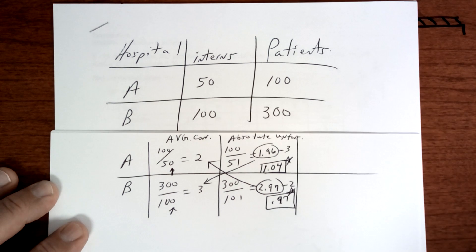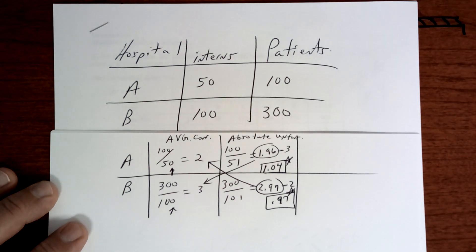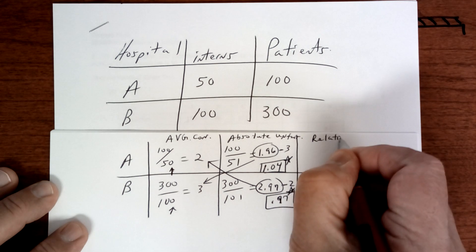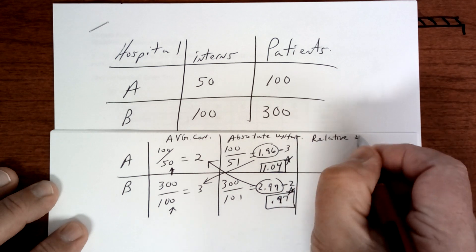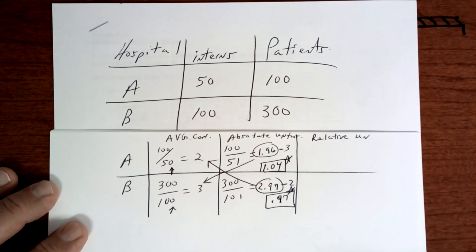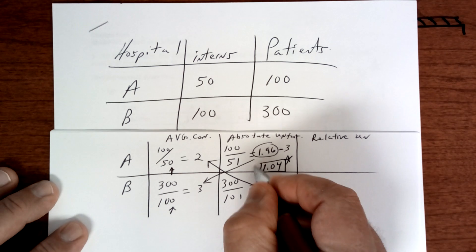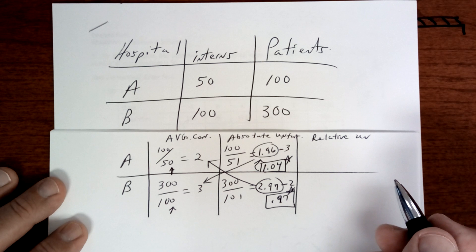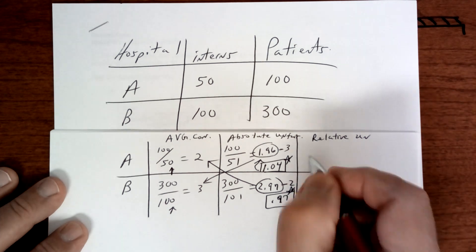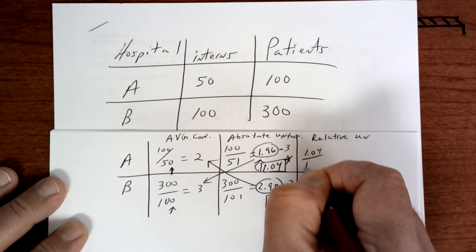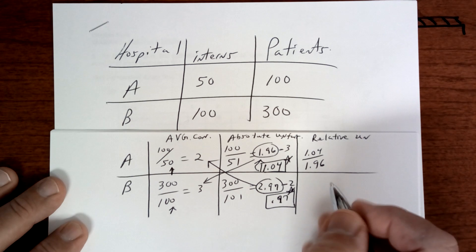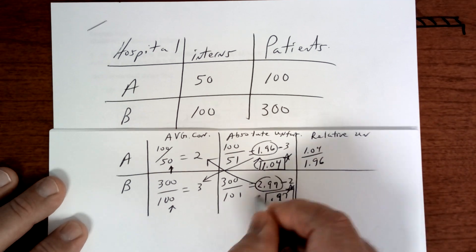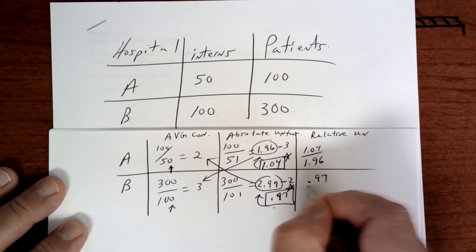To get the relative unfairness, you're going to divide the absolute unfairness divided by the average constituency — the new one. So it's going to be 1.04 divided by 1.96, and then this one is going to be 0.97 divided by 2.97.